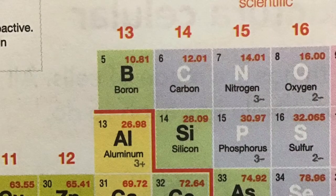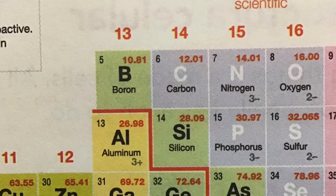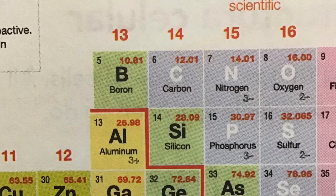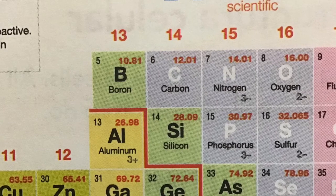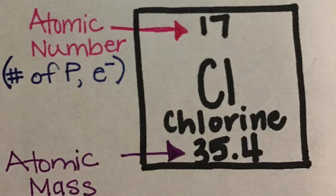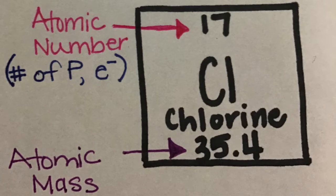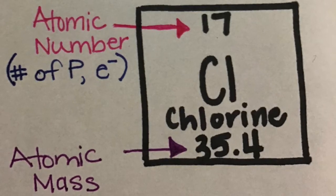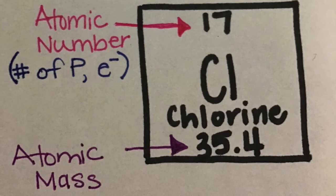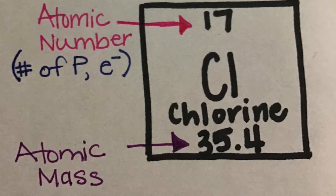For our next example and for most of your examples you complete in class, you will be given the element name and asked to use the periodic table to collect the needed information and draw your Bohr model. We will start with chlorine or Cl. We need to begin by looking at chlorine's subatomic particles. On the periodic table we can see that chlorine has an atomic number of 17. The atomic number tells us the number of protons and electrons. So we have 17 protons and 17 electrons.